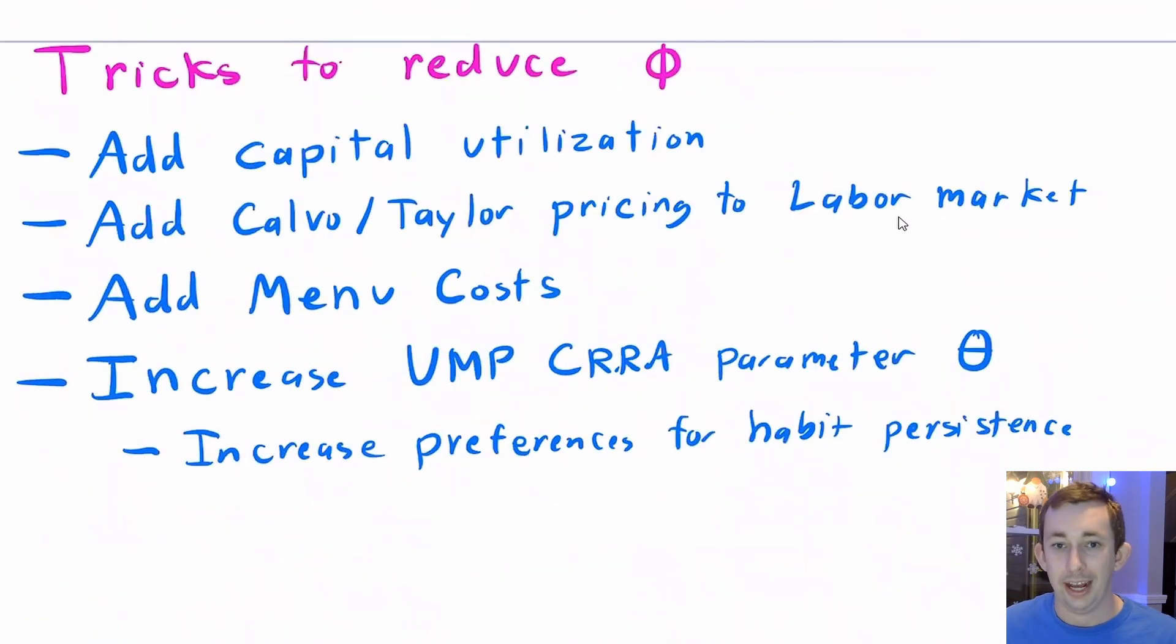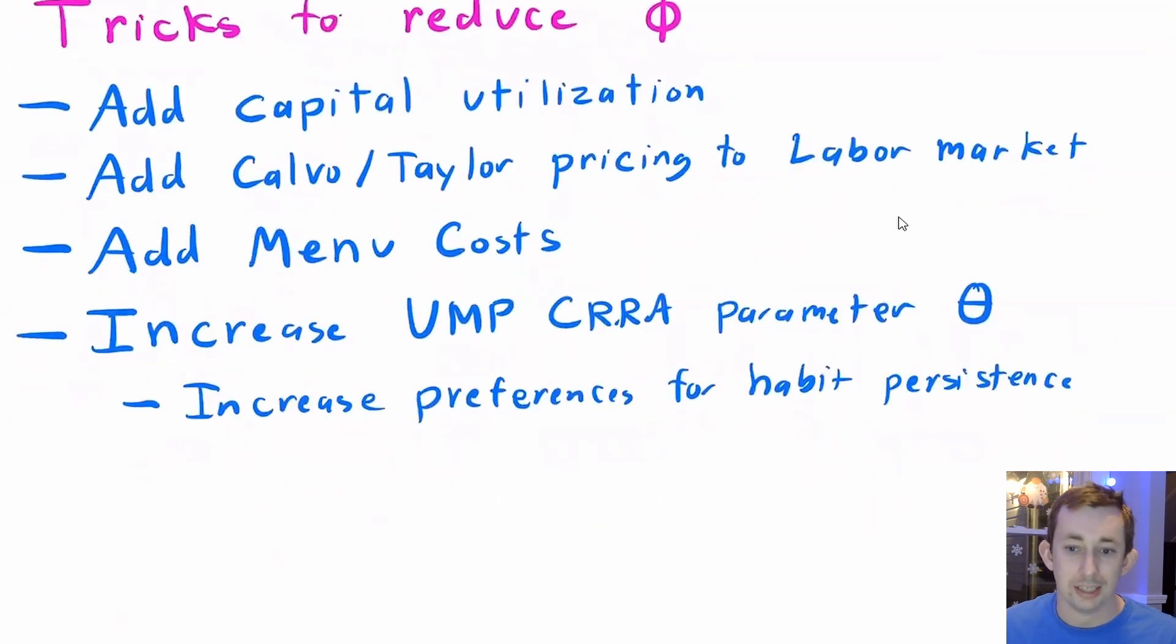What can you do? Well, you can add something called capital utilization, where you don't have to change the number of machines, you can change how hard each machine is run. You can add something like a Calvo or Taylor pricing to the labor market. We've talked about both Calvo and the Taylor market in previous videos. You can add something called menu costs. There's a whole host of things you can do to try and reduce the real rigidity parameter.